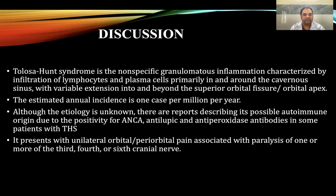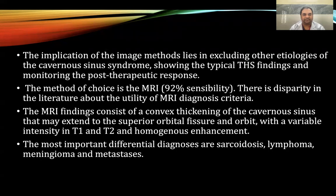It presents with unilateral orbital or periorbital pain associated with paralysis of one or more of the third, fourth, or sixth cranial nerves. The implication of imaging methods lies in excluding other etiologies of cavernous sinus syndrome, showing typical Tolosa-Hunt syndrome findings, and monitoring post-therapeutic response. The method of choice is MRI, which has 92% sensitivity.